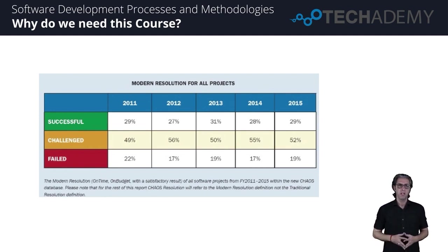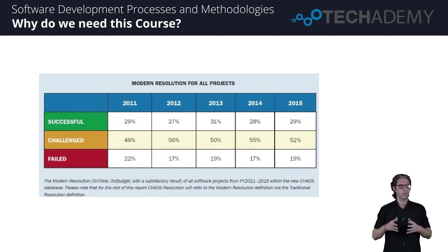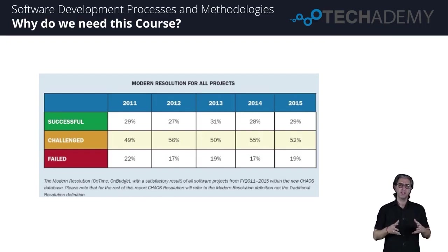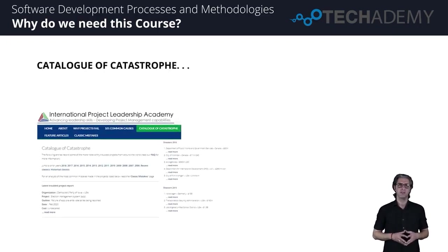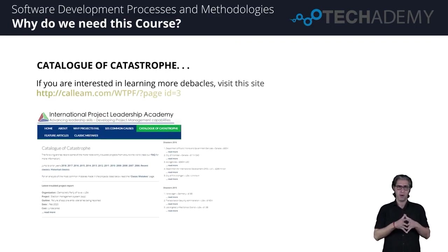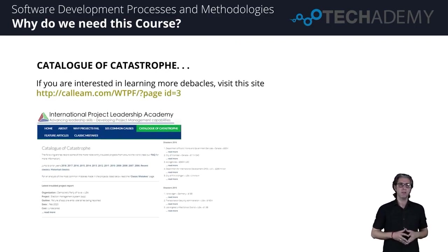This means that either the project was canceled before it could finish, or the project was finished but people did not actually find any use of it and it was discarded. So one in every five projects won't actually make it through to the final submission round. There is a website called Catalog of Catastrophe where they have listed all the projects that failed in those years.